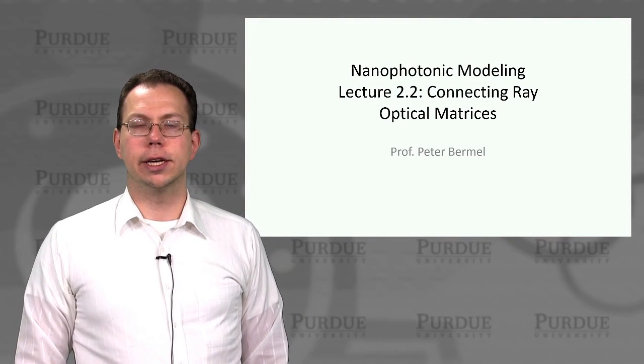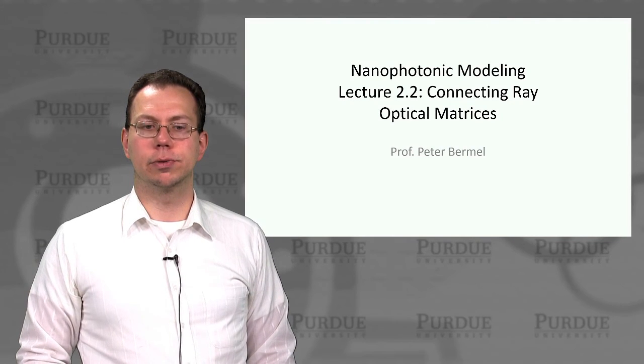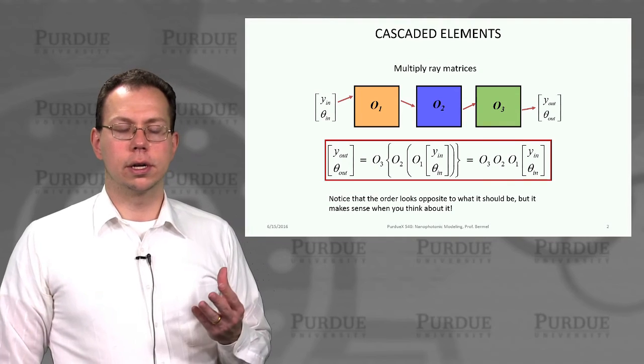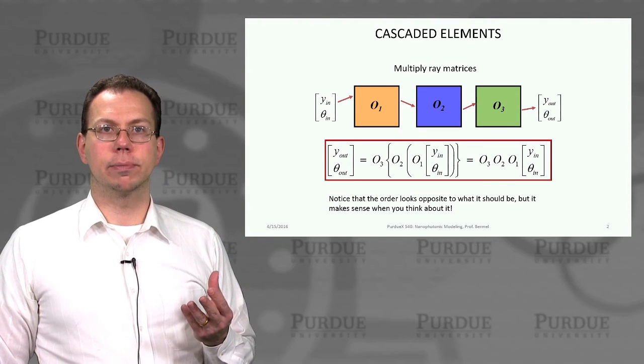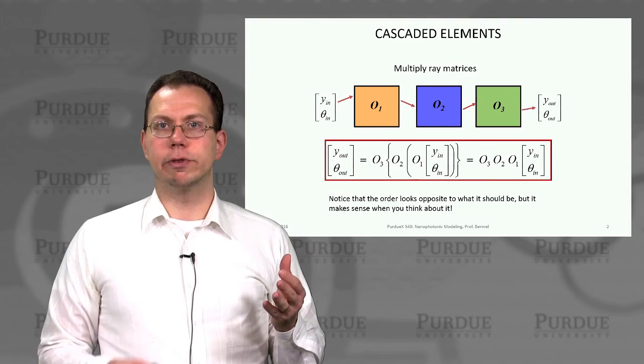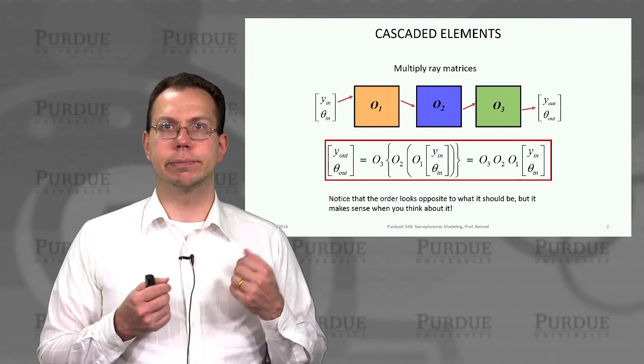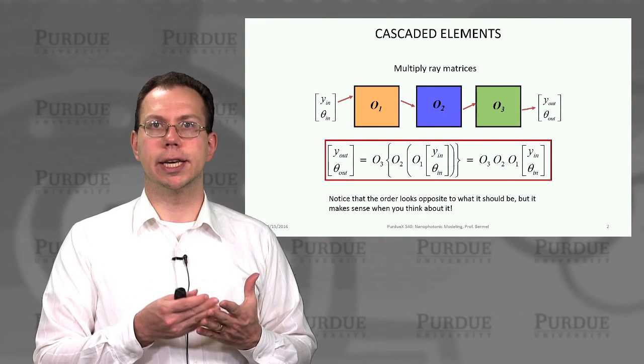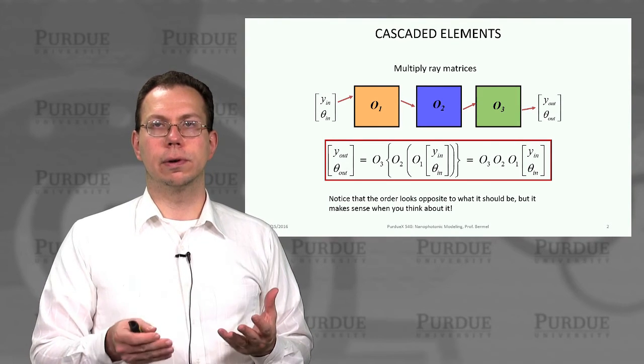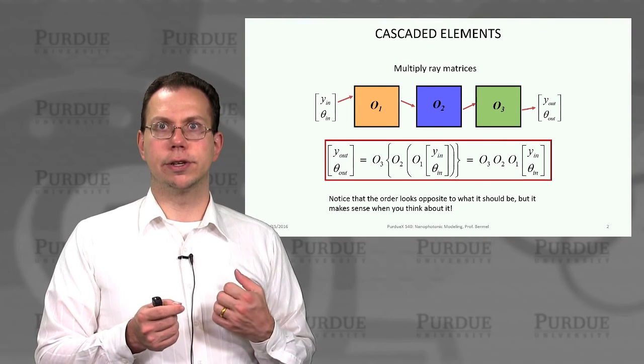This lecture will go into more details about how ray optical matrices work. The challenge with ray optical matrices is that we know the elementary forms, but what if we had more than one optical element at a time? Most optical systems will have many elements together, so how can we understand the interaction between all those elements?